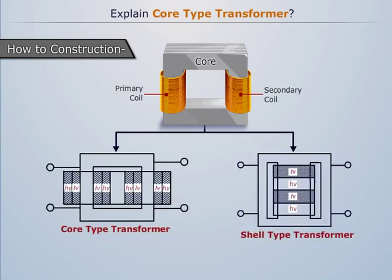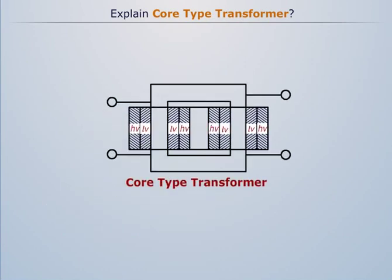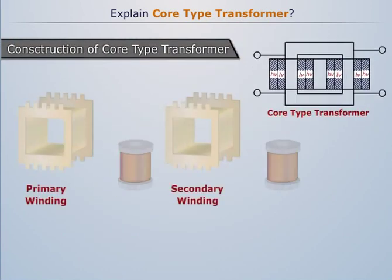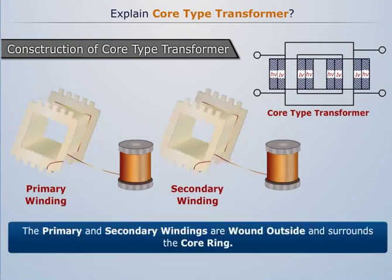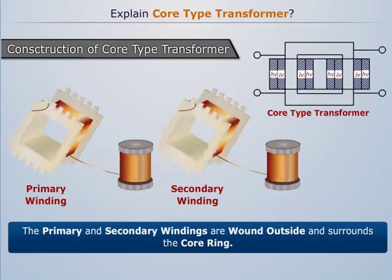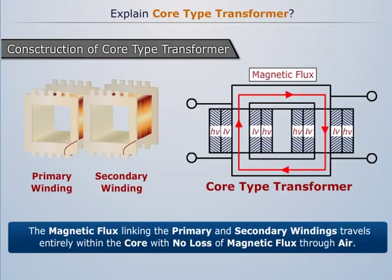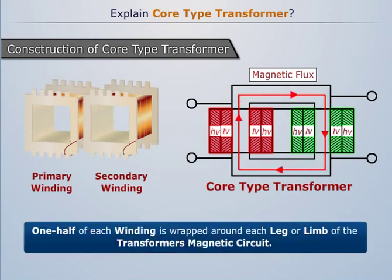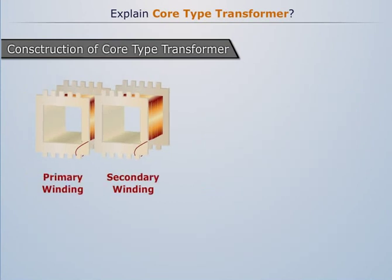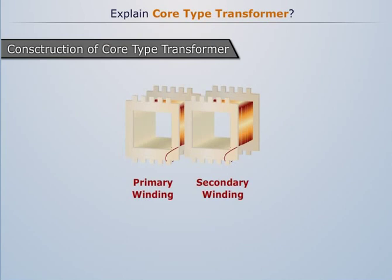In the core type transformer, the primary and secondary windings are wound outside and surround the core ring. The magnetic flux linking the primary and secondary windings travels entirely within the core, with no loss of magnetic flux through air. In core type construction, one half of each winding is wrapped around each leg or limb of the transformer's magnetic circuit.